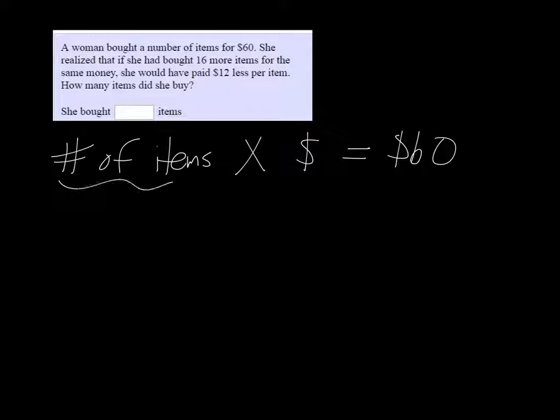Okay, so we need to start writing down what we know and what we need to find out. We know that the number of items that you buy multiplied by whatever the price is, well in this case it's going to be $60. So if I let N be the number of items and P be the price, then I get a little equation.